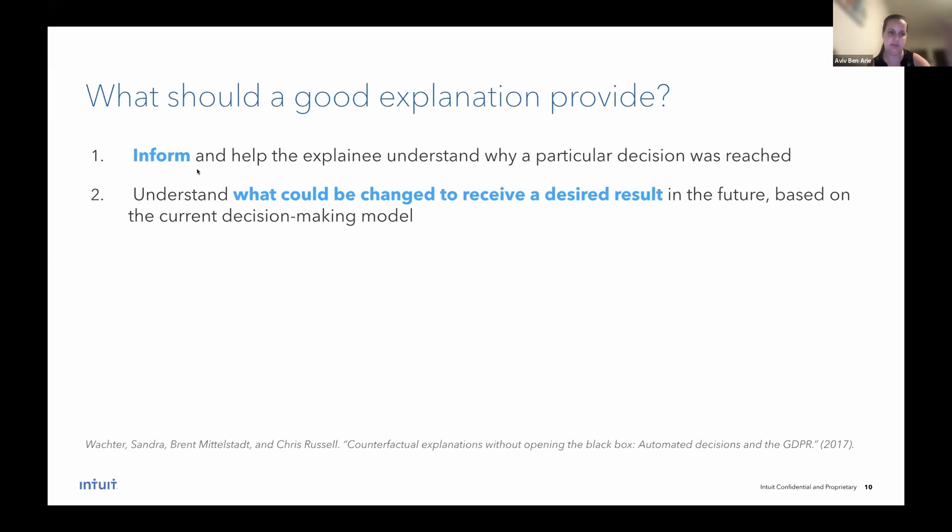Meaning, in our case, what does Amy need to change for Sarah? What does Sarah need to change in order for the model to predict that she will not churn? And this is based on the same decision-making model. So the first, the information part, as we saw before, can be completely satisfied by SHAP and also other methods I didn't talk about, for example, LIME. But we want to be able to answer both. And apparently both are satisfiable using a method called counterfactual explanations, which is the main topic for our talk today.